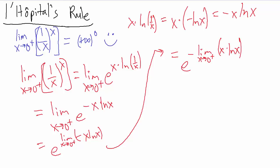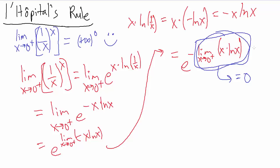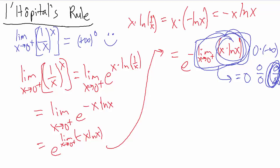This limit, the limit as x goes to 0⁺ of x times ln x, equals 0. By direct substitution we'd get 0 times negative infinity, which is an indeterminate form. We do algebraic manipulations to get infinity over infinity, apply L'Hôpital's rule, and eventually find this limit equals 0. The details are in example 4.